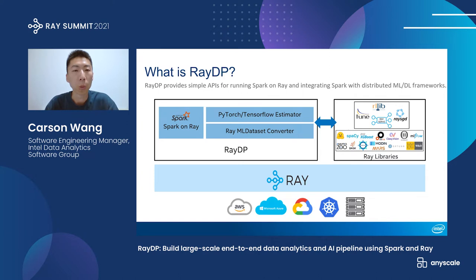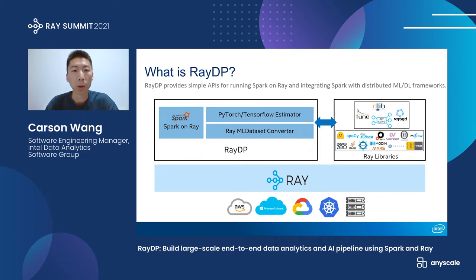To integrate Spark with distributed ML and deep learning frameworks, we provide two approaches. The simplest one is to use the PyTorch and TensorFlow estimator — you can simply create an estimator by passing in your model, optimizer, loss function, and a few other configurations, then directly fit that with your Spark DataFrame. We will take care of everything else, like doing the data exchange from Spark to the deep learning framework and scaling out your training on a Ray cluster. If you prefer to use the framework or library API directly, we also provide the Ray MLDataset converter, which allows you to convert a Spark DataFrame to a Ray MLDataset that can be consumed by libraries like XGBoost, Horovod, and RaySGD.